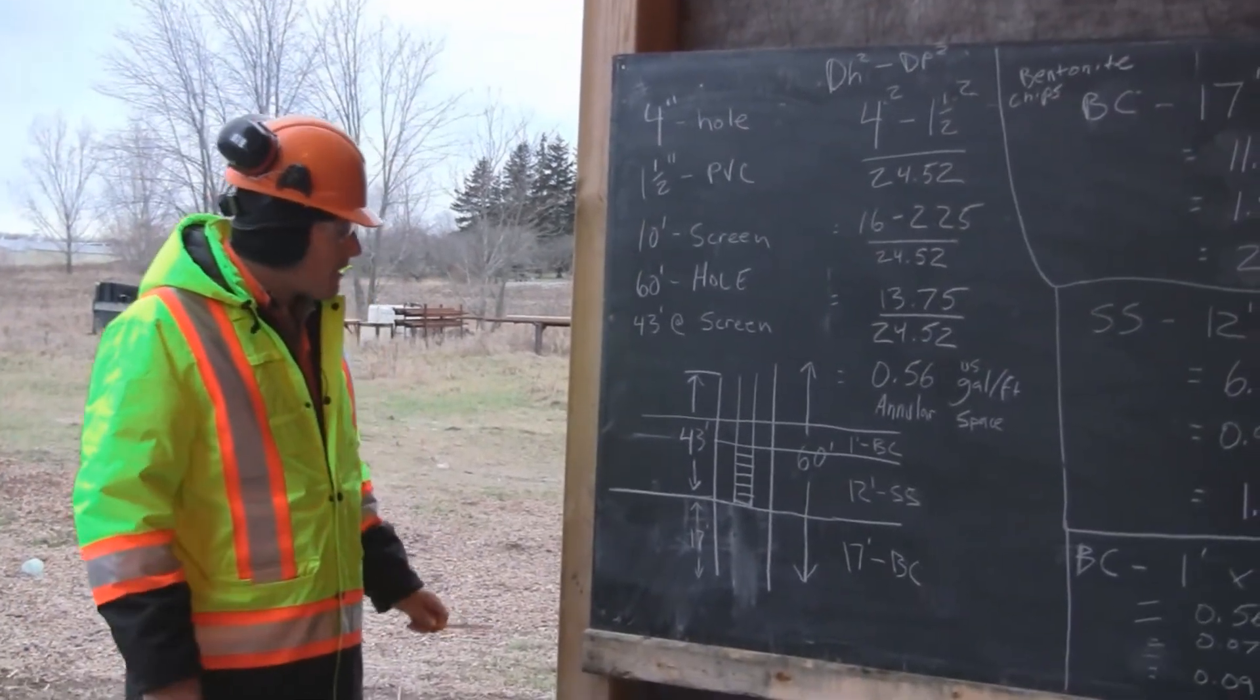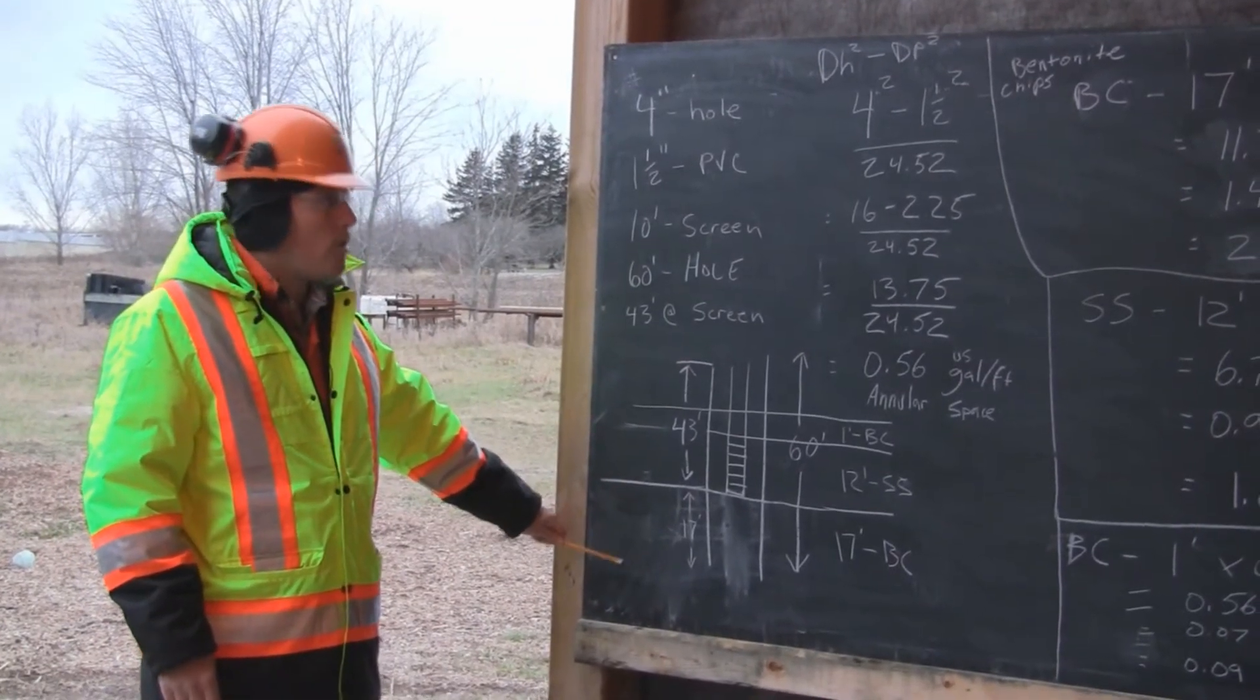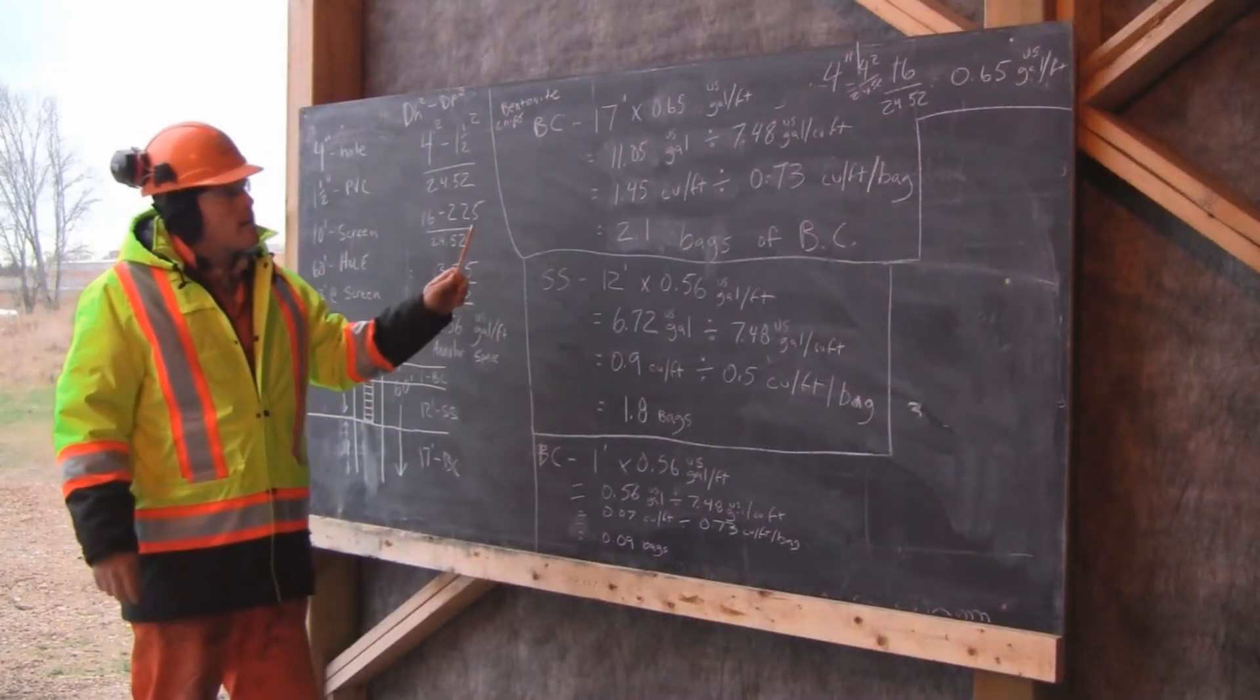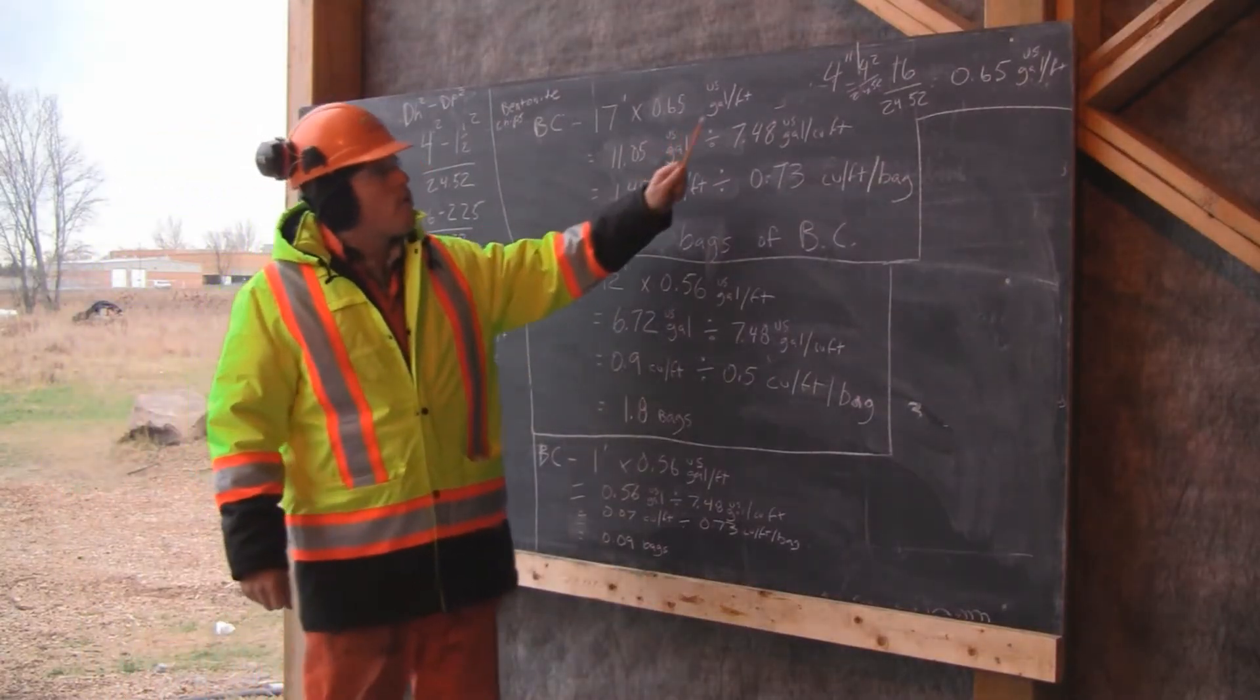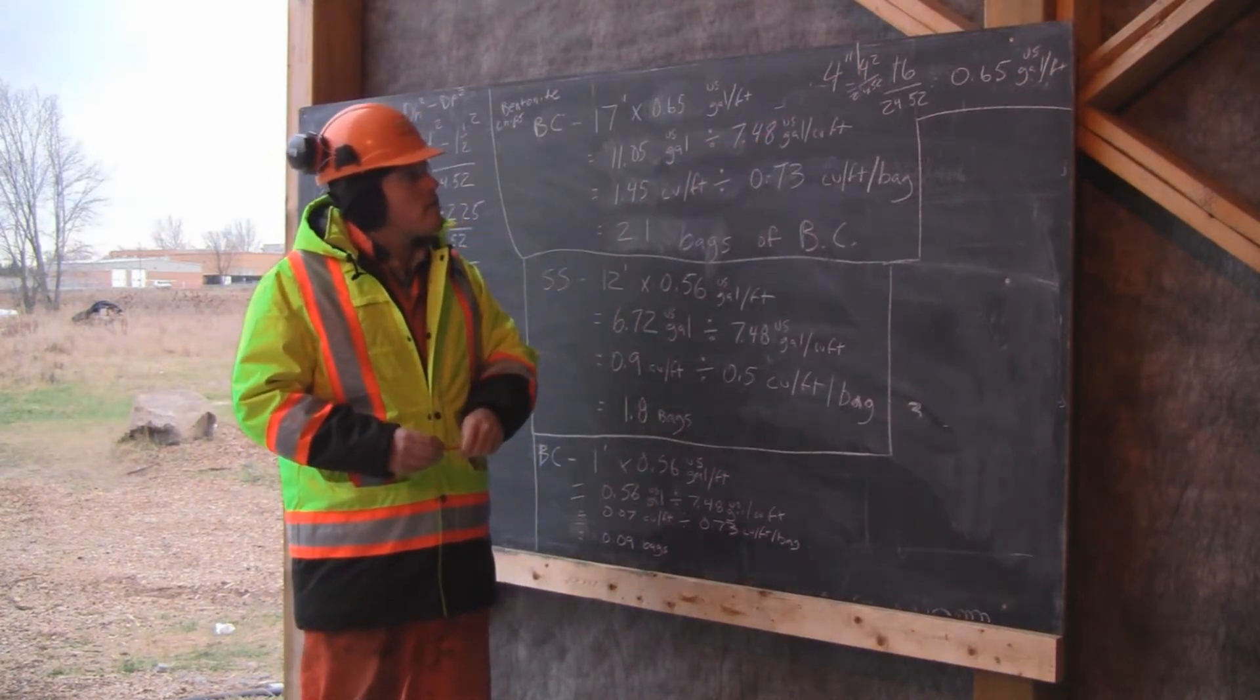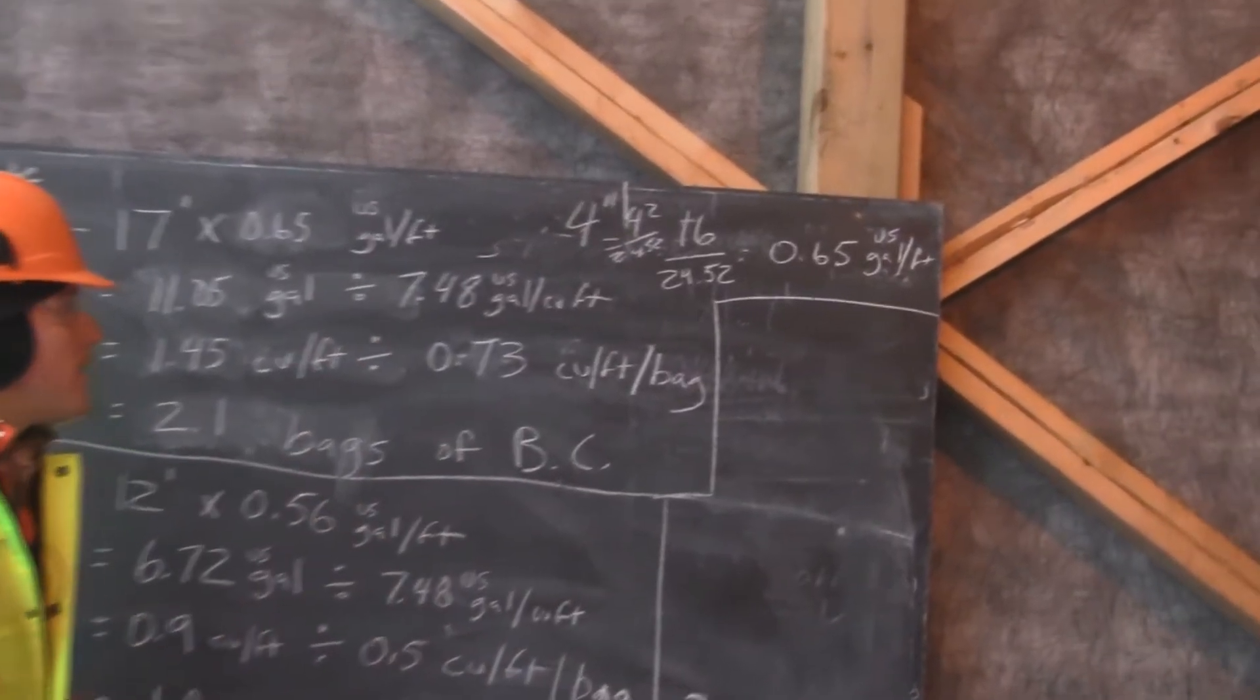We're going to start by figuring out the annular space for the 17-foot of open hole. Our calculation for this, we have a 4-inch hole. For our calculation, we do 4 inches squared divided by 24.52.